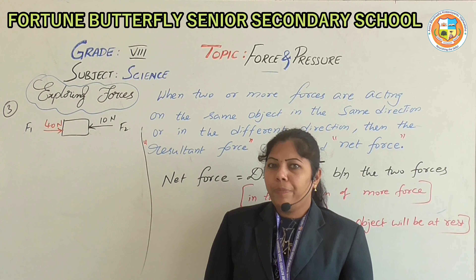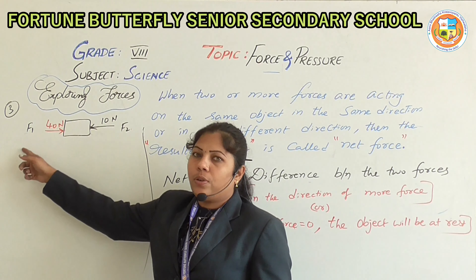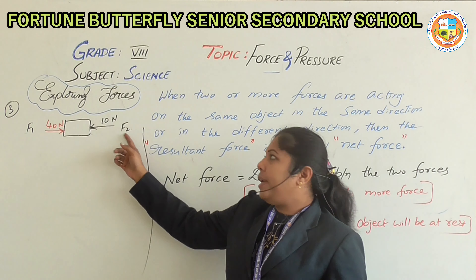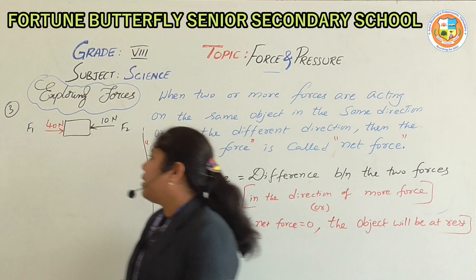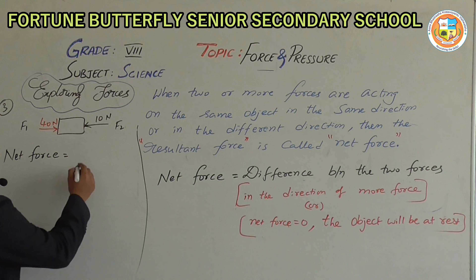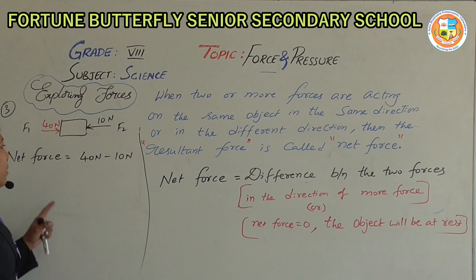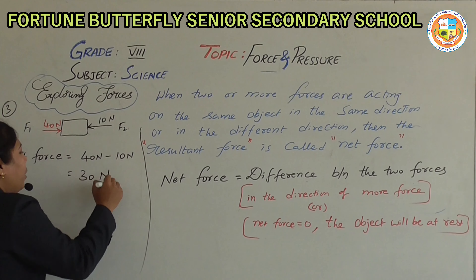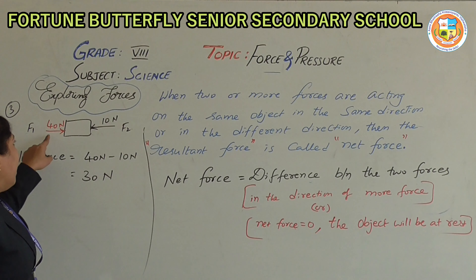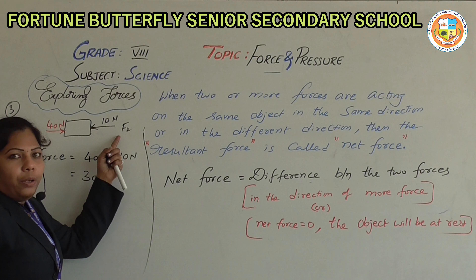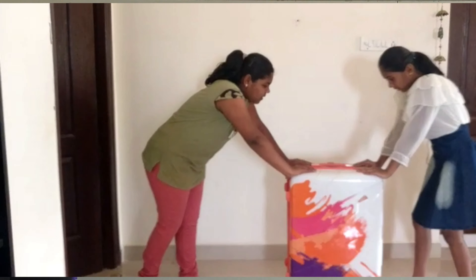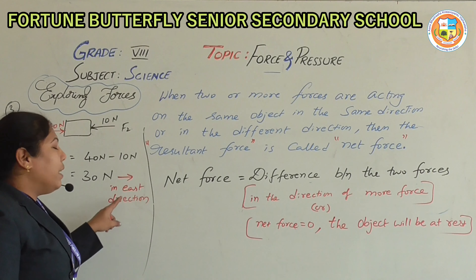Now the third case: two forces are acting on the same object. F1 is 40 newtons towards east and F2 is 10 newtons towards west. The net force is the difference between the two forces: 40 newtons minus 10 newtons equals 30 newtons. Since 40 newtons is greater than 10 newtons, the direction is towards east. The net force is 30 newtons in the east direction.